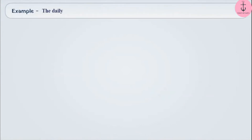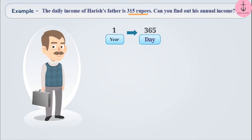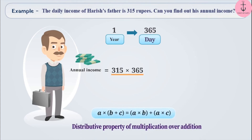Next example: the daily income of Harish's father is 315 rupees. Can you find out his annual income? It is given that Harish's father's daily income is 315 rupees. We know there are 365 days in a year, so his annual income will be 315 into 365. Finding the product of these two values seems difficult, but when we apply the distributive property of multiplication over addition, we can solve it easily.